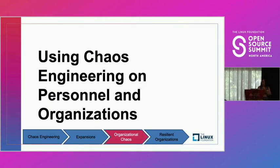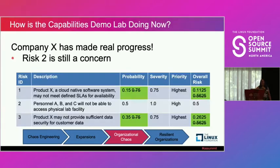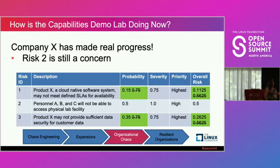Now we get to the fun stuff: using chaos engineering on your personnel and organizations. This is a relatively new extension that hasn't been run all that often. Risk number two — Personnel A, B, and C will not be able to access the physical lab facility — is not a technical problem, not an application or architecture problem, not even a security tools problem. This is a personnel problem: are we able to get through the processes that allow access to a restricted facility for people who aren't normally there?